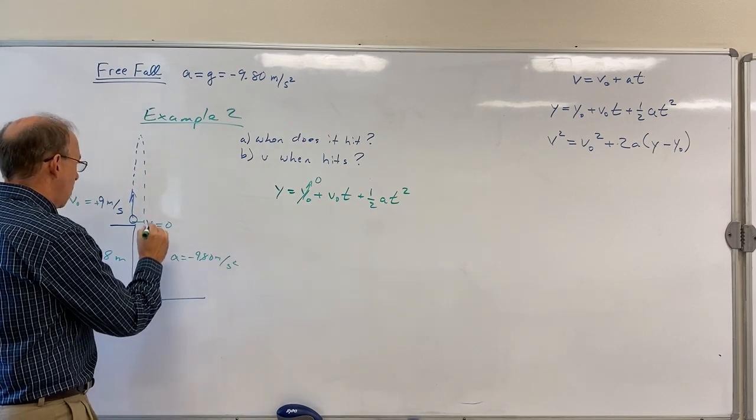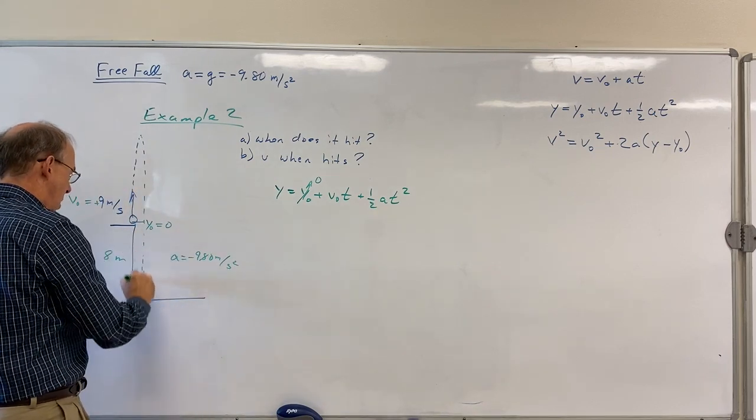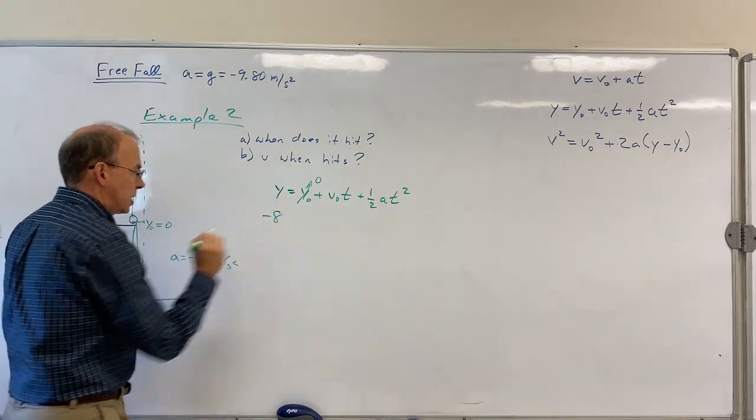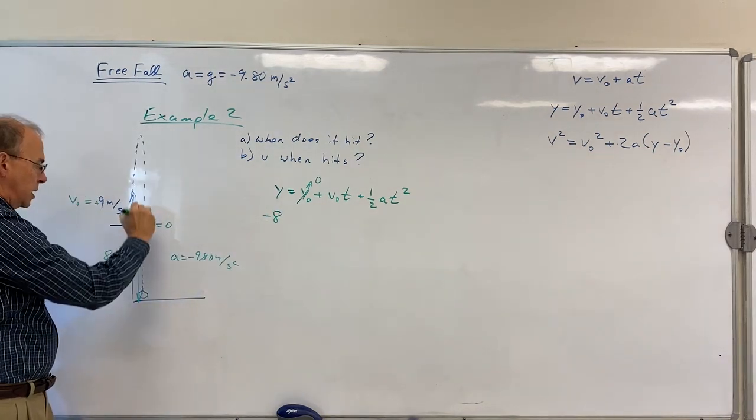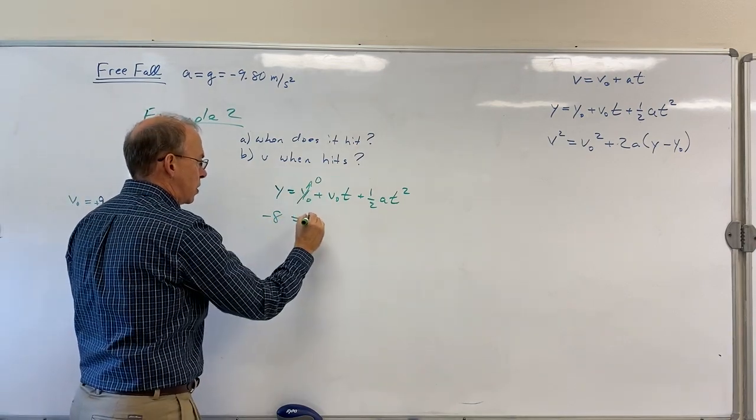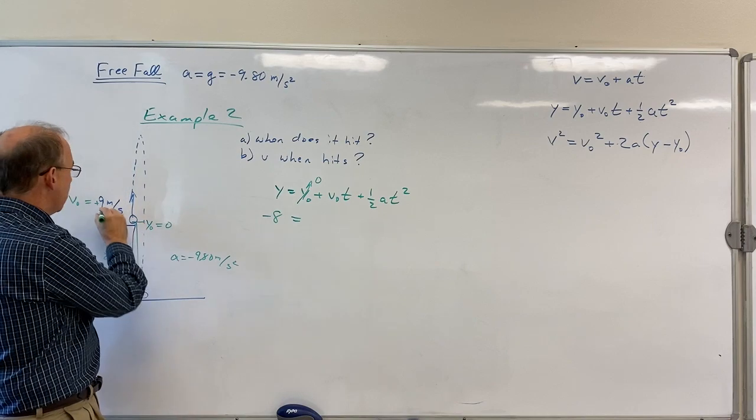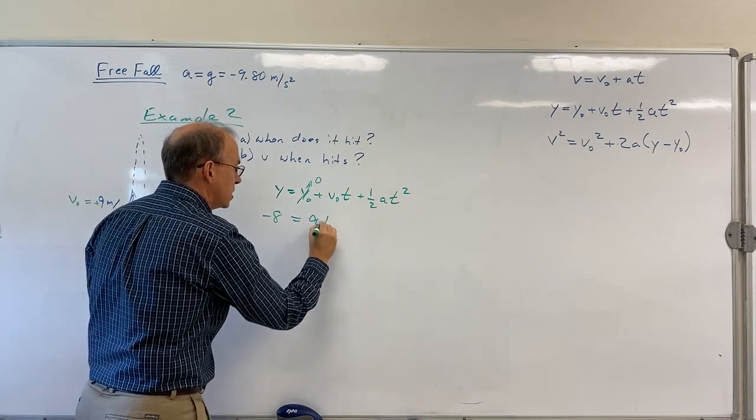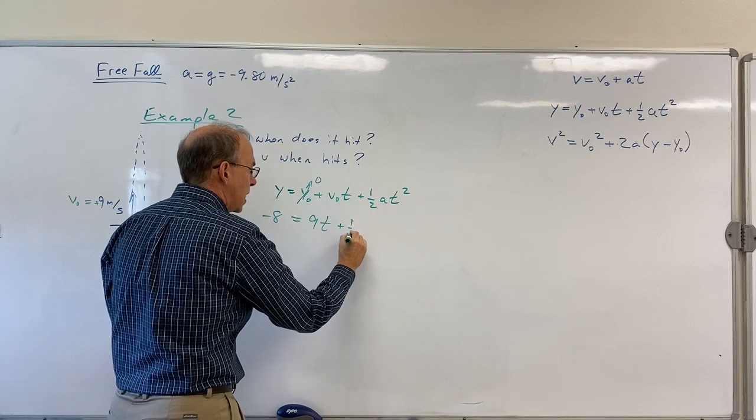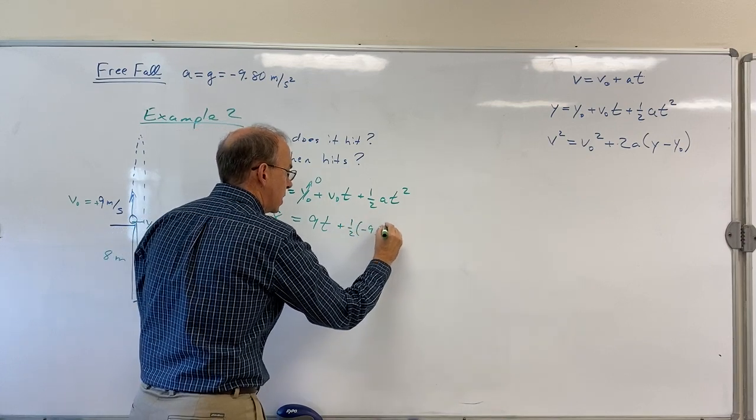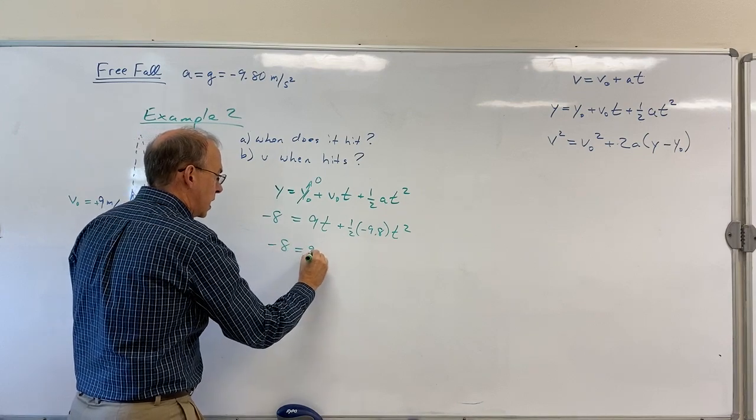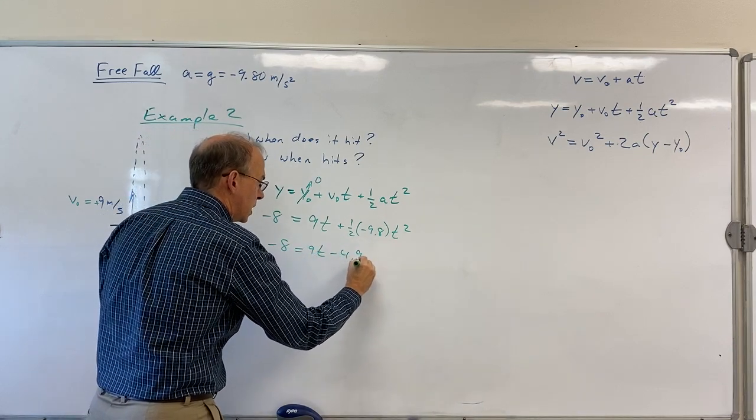So y when the ball hits, the final y, is -8 because positive numbers are up, negative numbers are down. So that's -8. It's zero plus v₀t. V₀ is 9, so this is 9t plus ½at². So this is plus ½ times -9.8t². Or -8 = 9t - 4.9t².